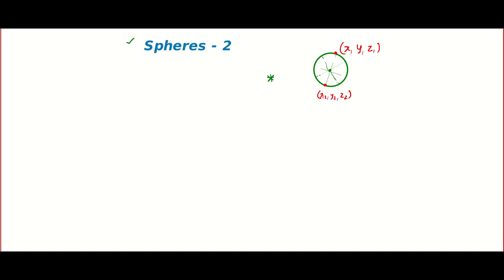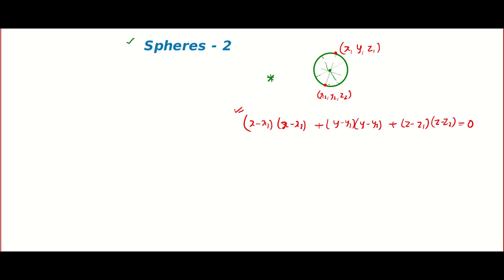In this condition the equation of the sphere will be: (x − x₁)(x − x₂) + (y − y₁)(y − y₂) + (z − z₁)(z − z₂) = 0. If they ask a basic problem based on this, you can use this formula, simplify, and you will get the marks.